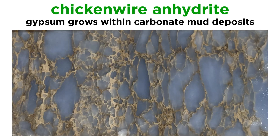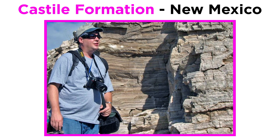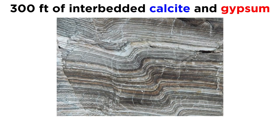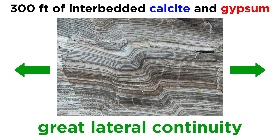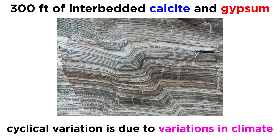Gypsum and anhydrite can form a nodular texture, sometimes called chicken wire anhydrite. It forms during the early stages of diagenesis, when gypsum crystals grow within deposits of carbonate mud, displacing and compacting the mud. Evaporite rocks are sometimes laminated, as in the Castile formation of New Mexico. It consists of up to 300 feet of interbedded calcite and gypsum, with many of the individual layers spanning great distances — in other words, it has great lateral continuity.